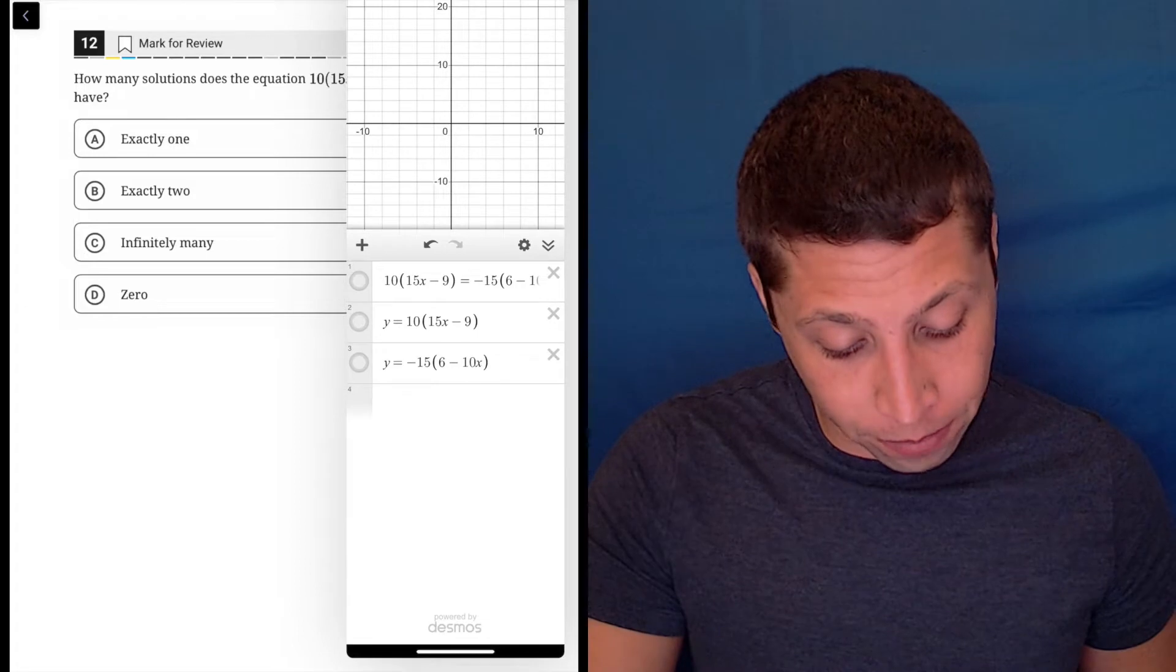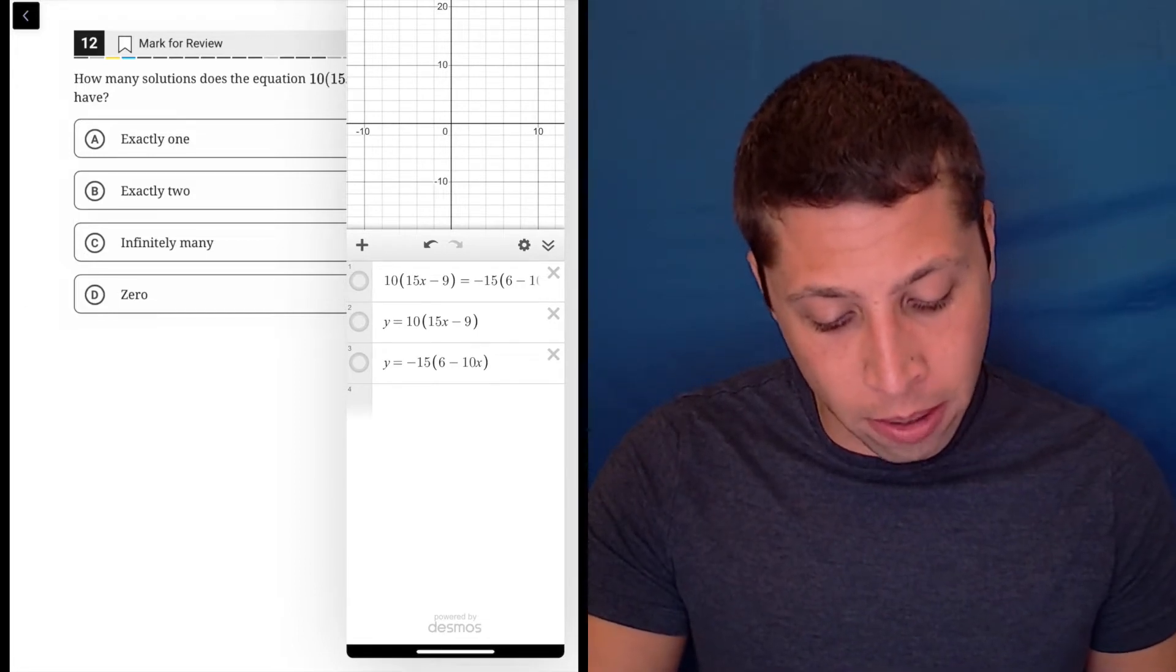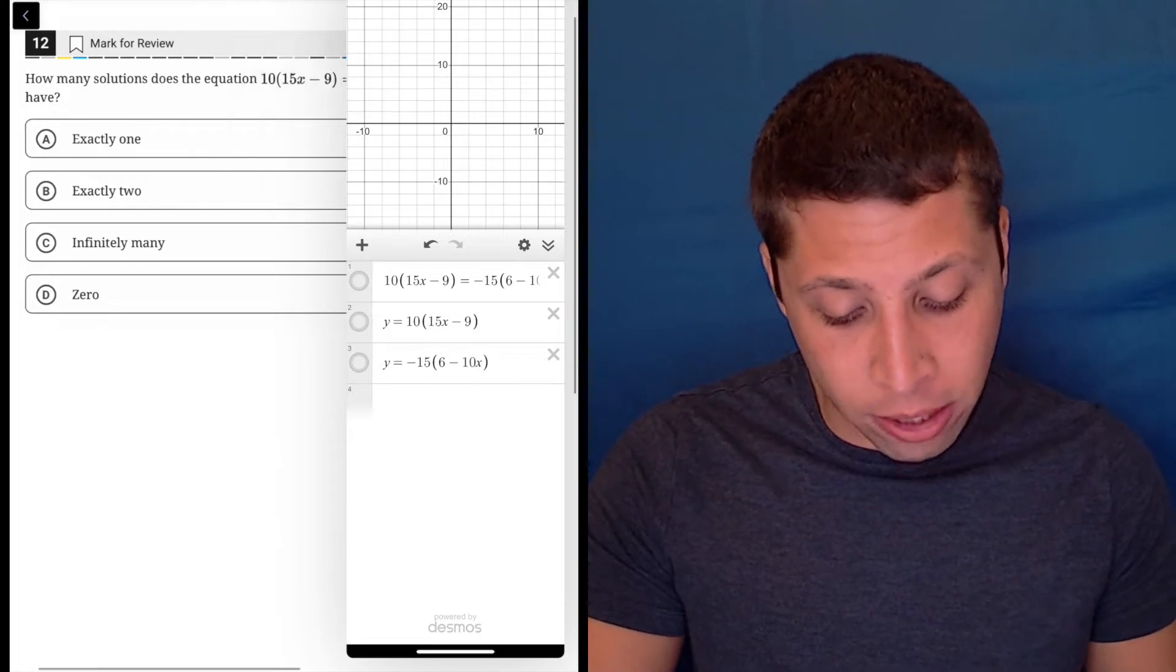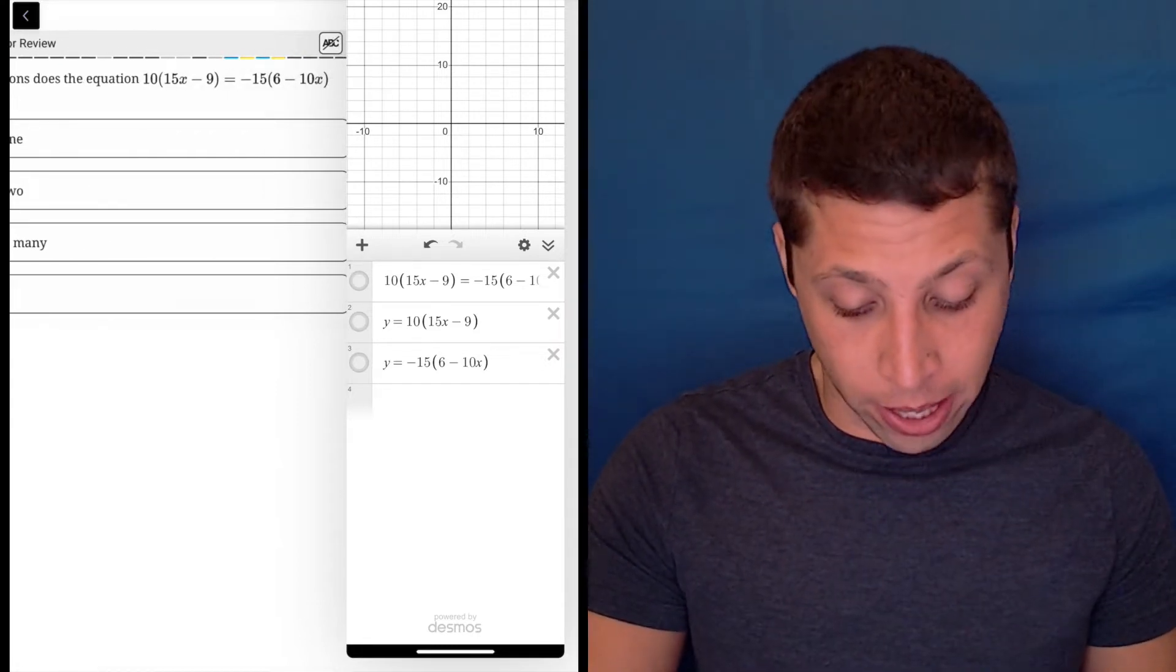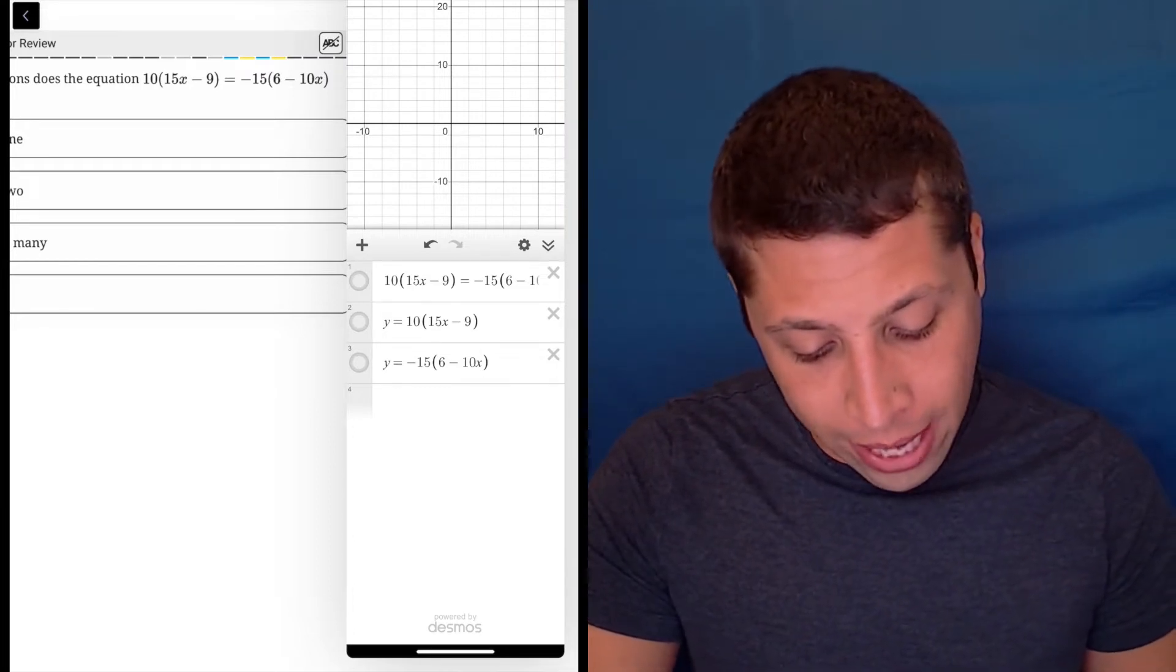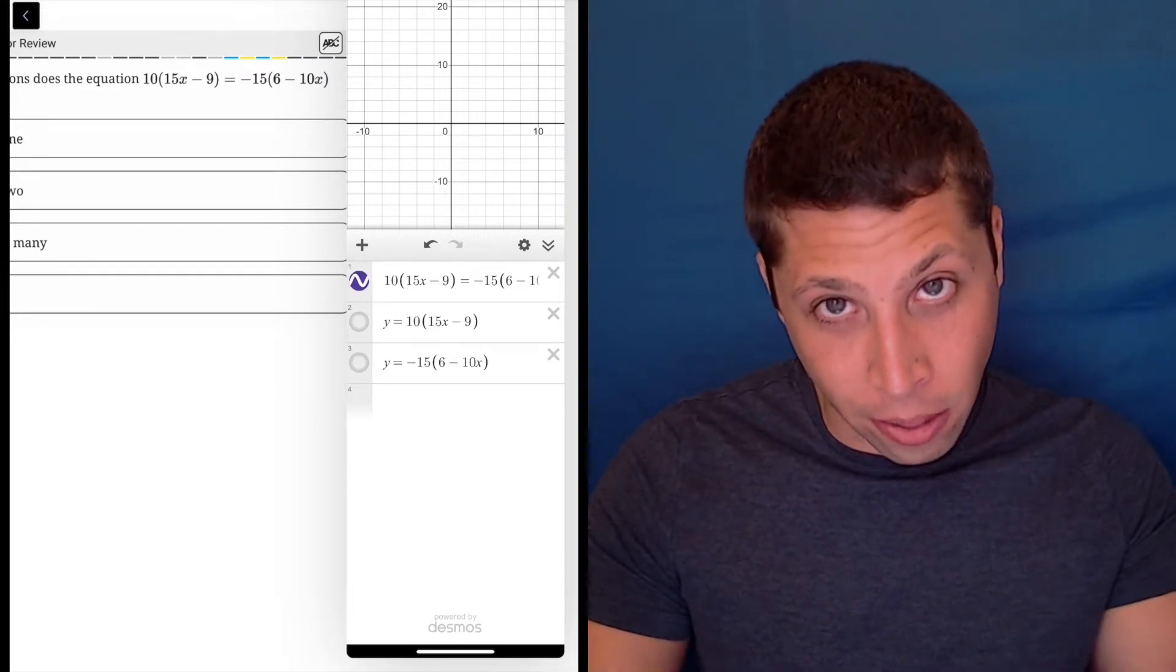So if we do that, I've got a couple options here. The top one, which I'm going to turn on in a second, is just straight up what they gave us: 10 times 15x minus 9 equals negative 15 times 6 minus 10x. So if I hit that, nothing happens.